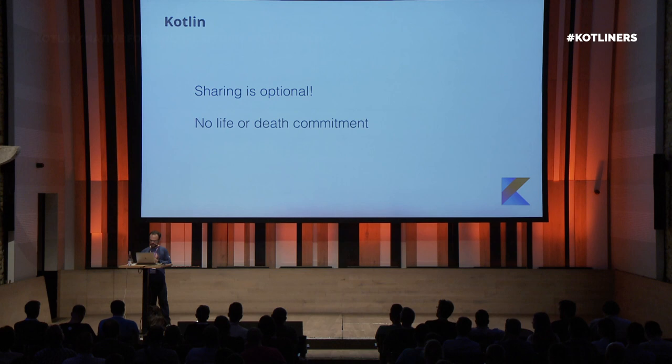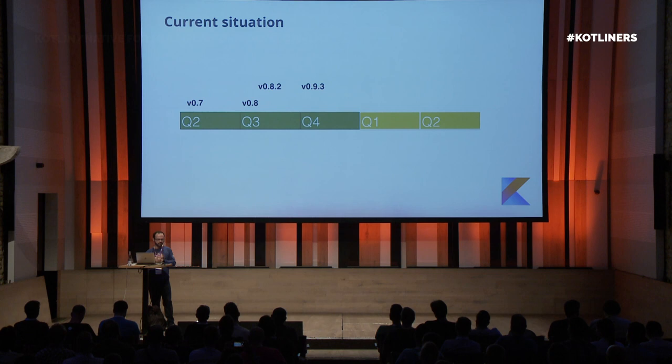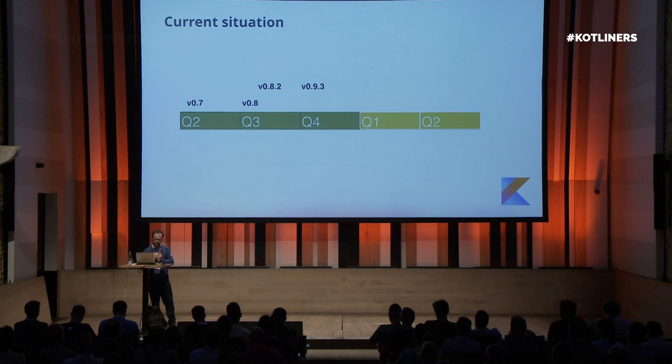This is the current situation. Last year at KotlinConf, version 0.9.3 was released. This is still a beta version. I think some people were expecting a fully stable release by that time, but it didn't happen. I don't think it would be that weird if they released a stable version this year, but you never know. This version 0.9.3 includes the IDE tooling and coroutines.